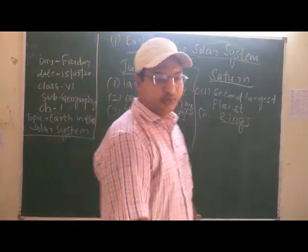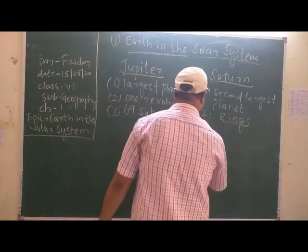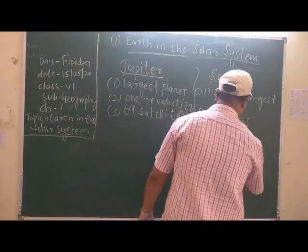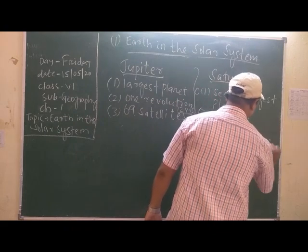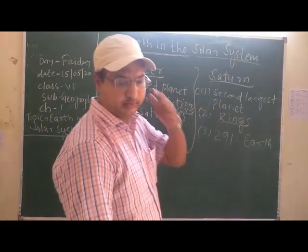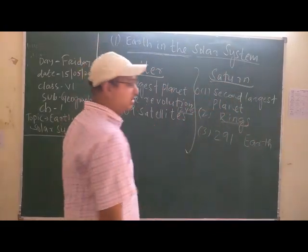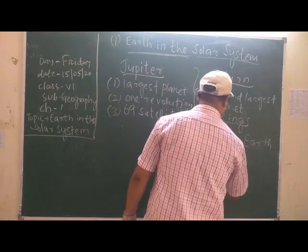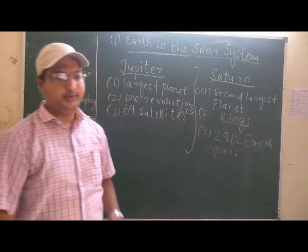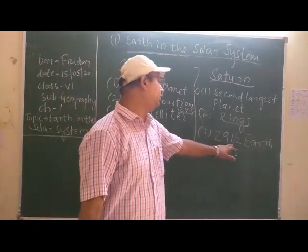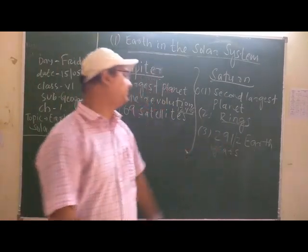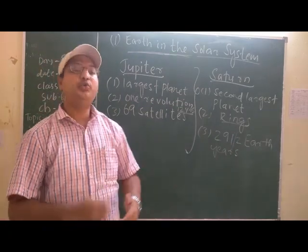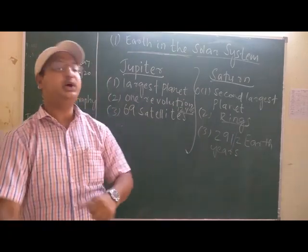Saturn takes 29 and a half Earth years for one revolution, meaning to revolve around the sun.